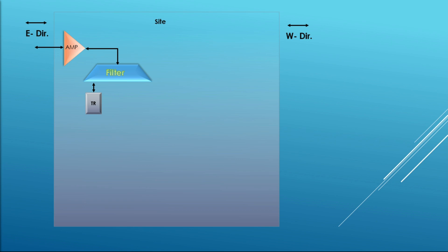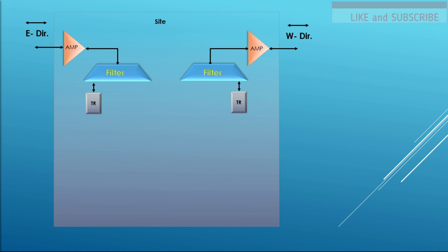Similarly, we have the same setup for the west direction. We receive the signal, it goes to the amplifier, then to the filter which will multiplex or demultiplex the signal, and the signal will drop on the transponder. Similarly, if we want to add traffic, it goes from the transponder to the filter, then the amplifier, and goes out. The same configuration applies for the west direction.